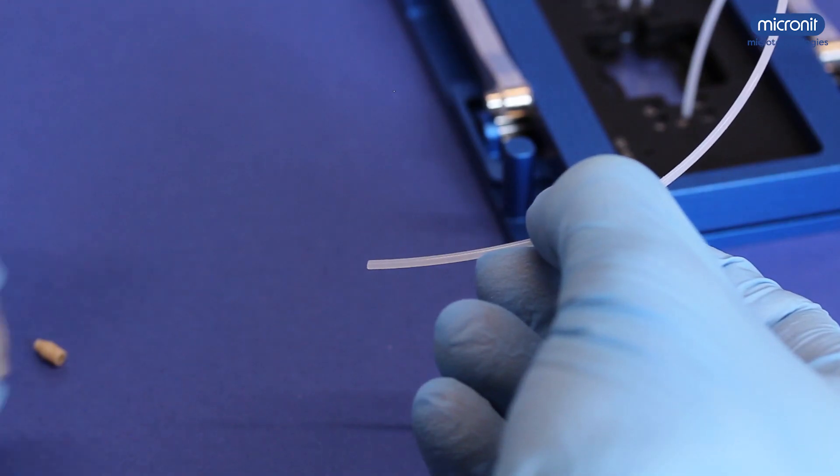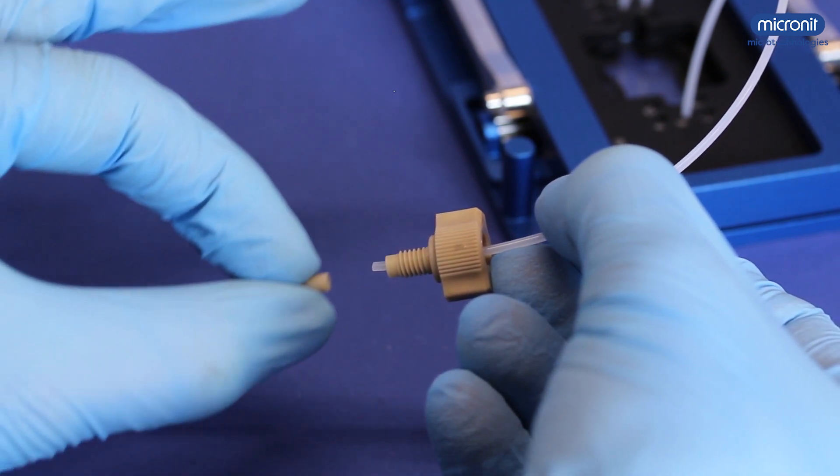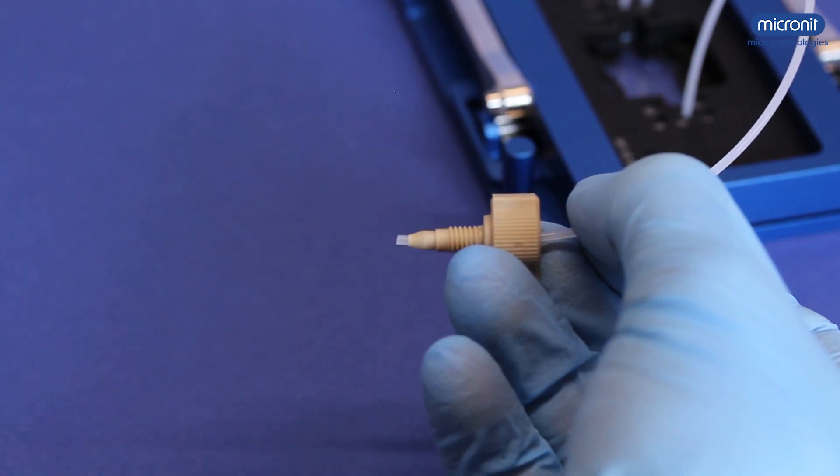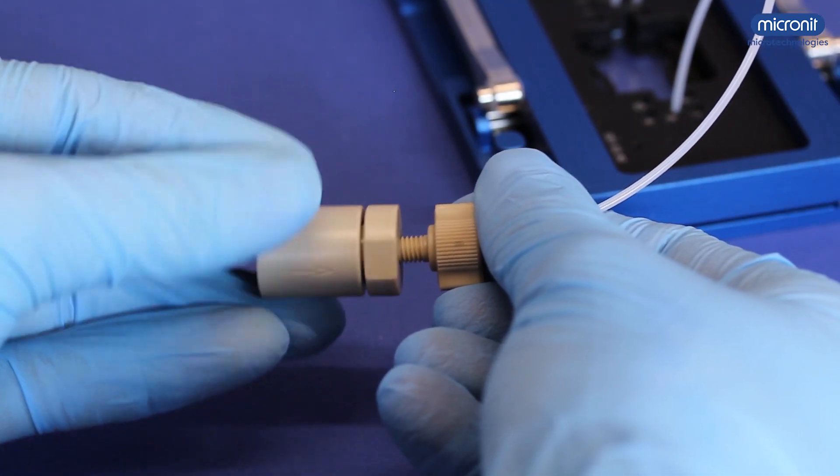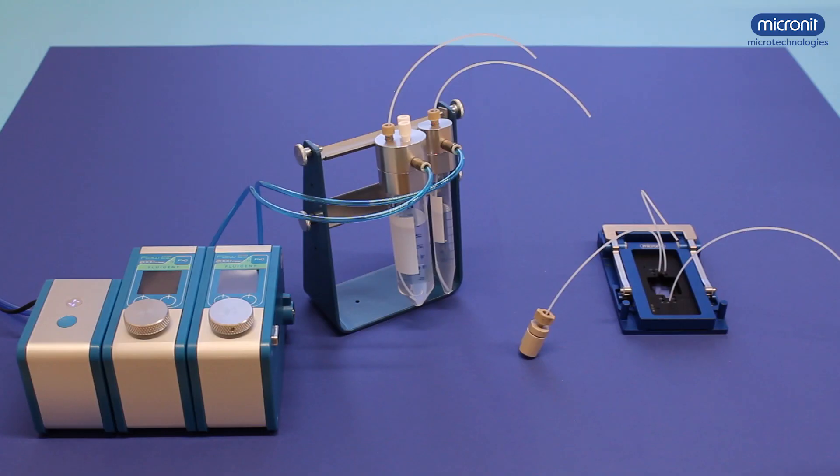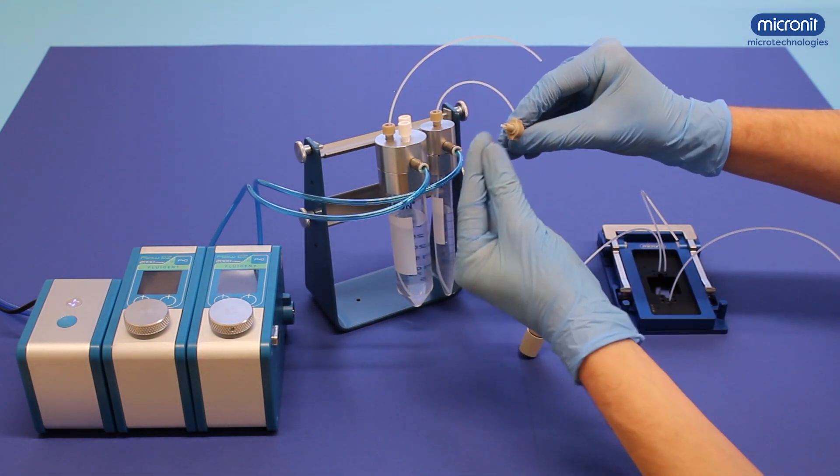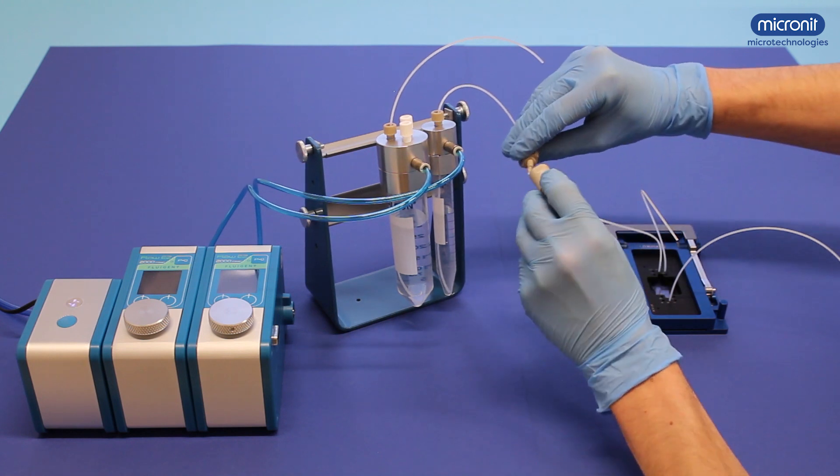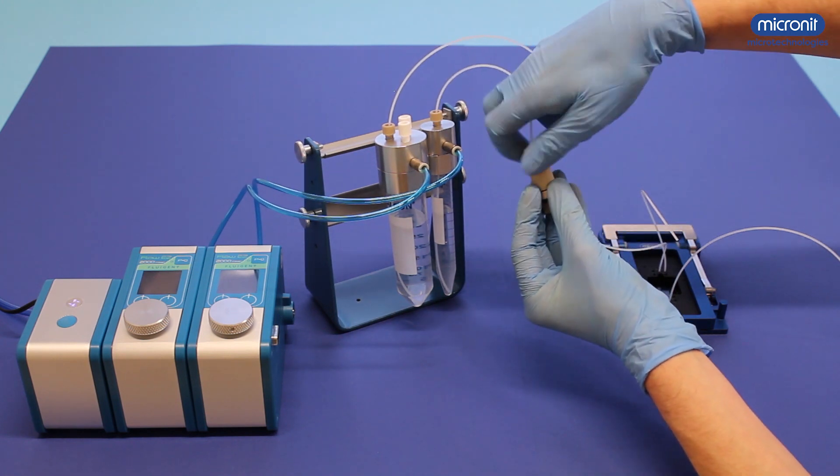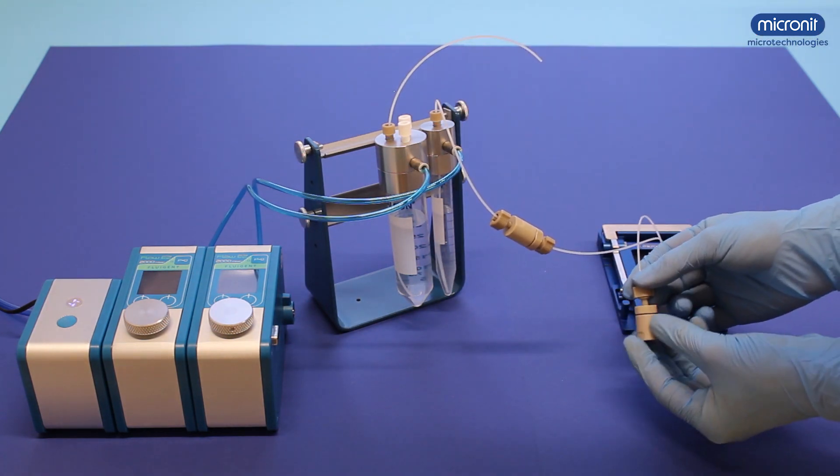To connect the filters to the tubing, string these parts on it. Screw the filter on it, with the arrow pointing in the direction of the flow. The same components can be used to connect the filter to the rest of the setup. And the same can be done for the other channel.